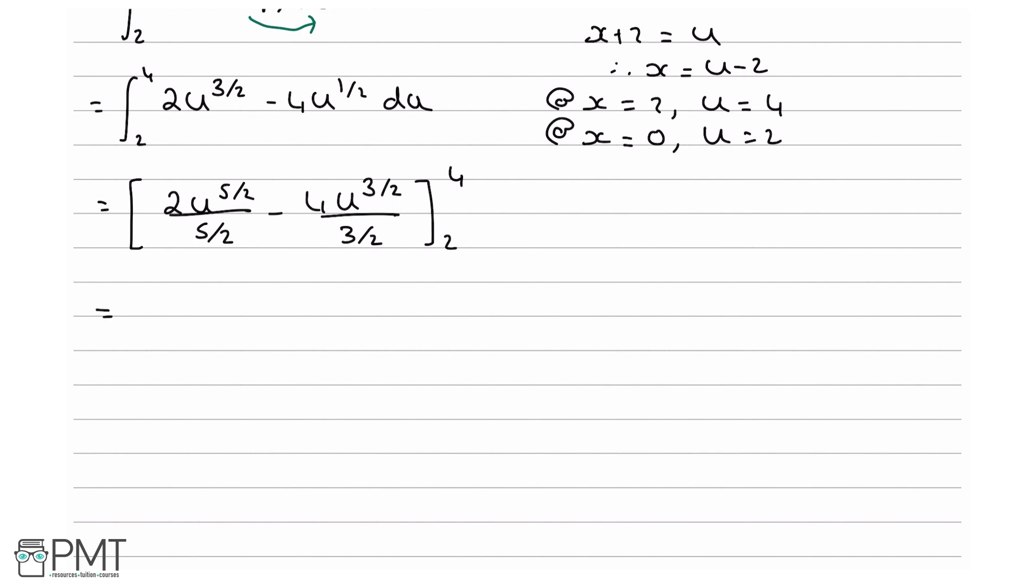Simplifying this and rearranging the fractions, we will end up with, so 2u to the 5 over 2 divided by 5 over 2 is the same as 2u to the 5 over 2 times 2 over 5. So what we will end up with is 4u to the 5 over 2 divided by 5, minus 8u to the 3 over 2 divided by 3, from 2 to 4.